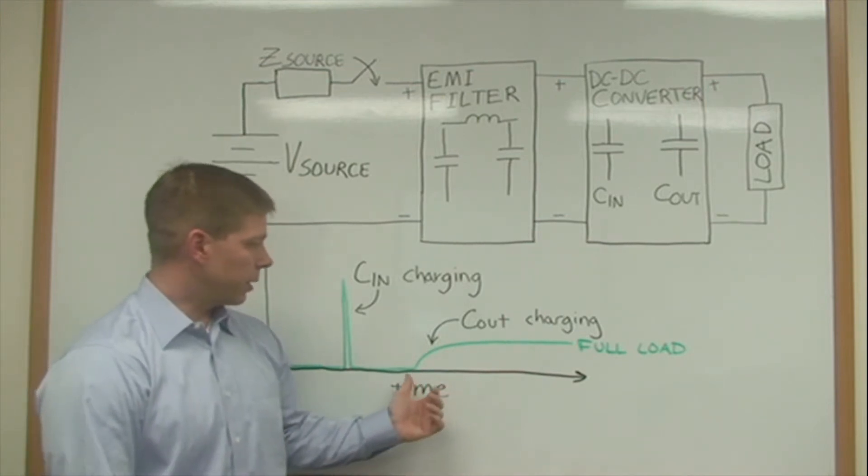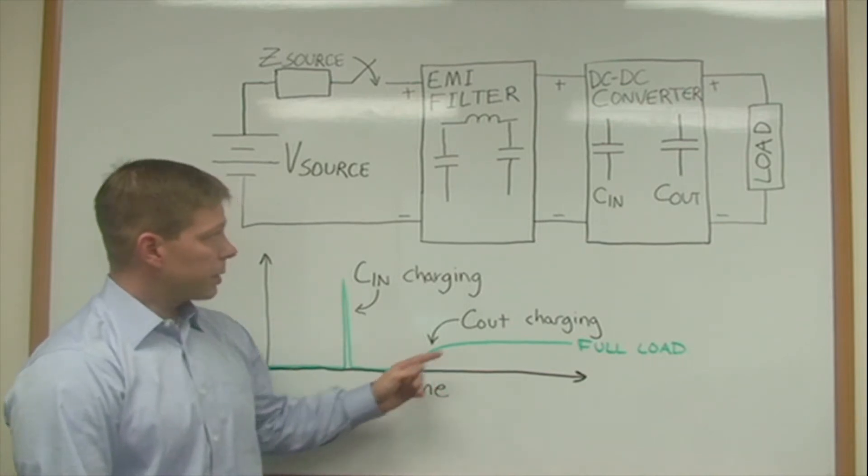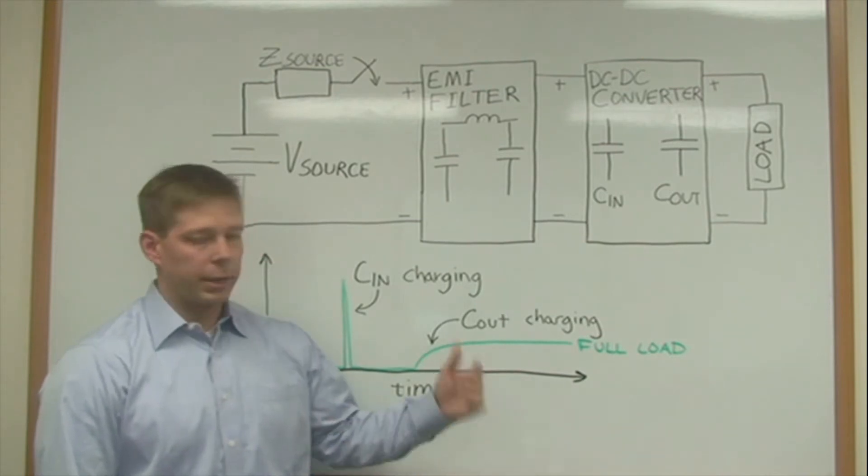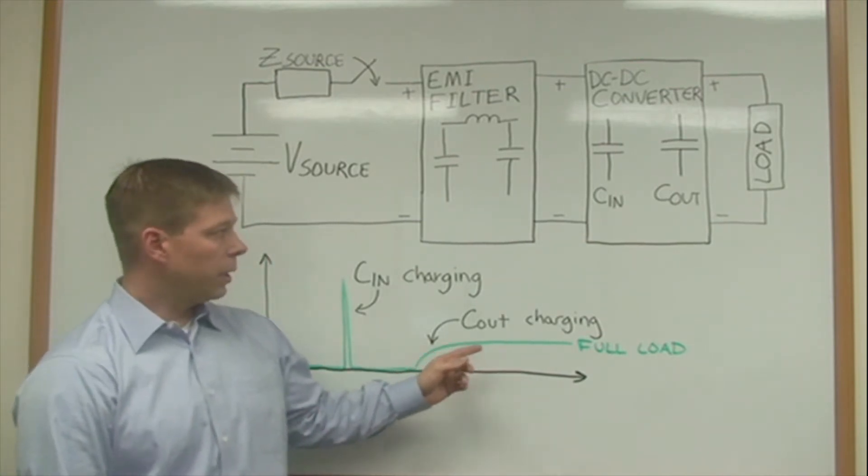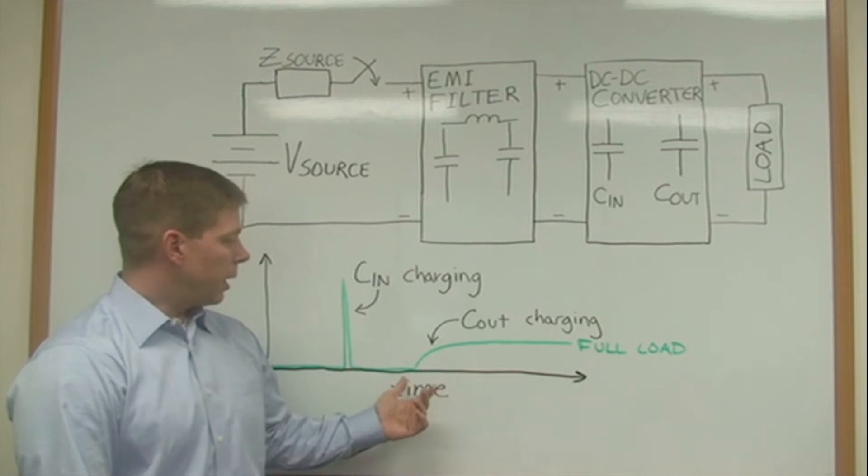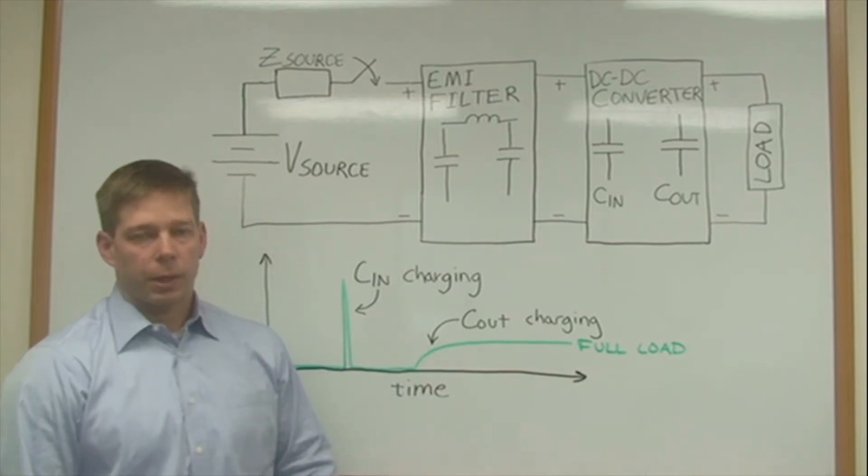The second region of the inrush current waveform is the charging of the output capacitance of the DC to DC converter and also any capacitance that's in the load. This is always well controlled when using VPT DC to DC converters because they have a soft start circuit that slowly ramps up the output voltage to control that charging of those output capacitors.